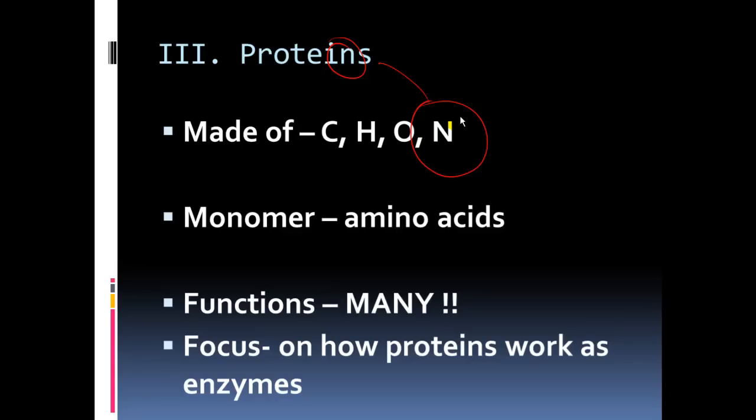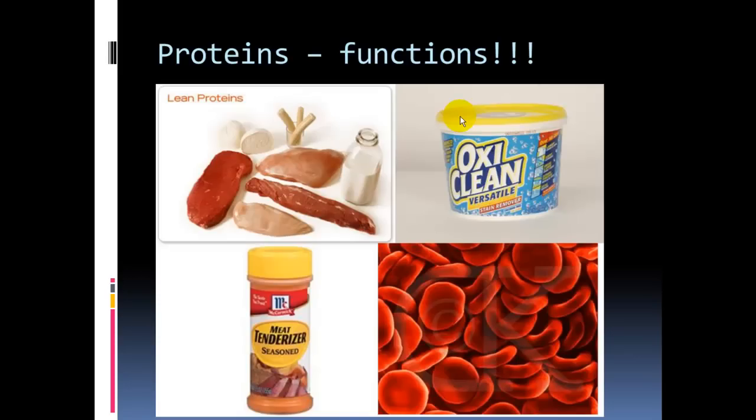We have thousands of proteins in our body. The one we'll focus on first is how they work as organic catalysts—as enzymes. Enzymes tenderize meat by breaking bonds, making it easier to digest. Meat, dairy, and tofu are proteins important for our diet. Stain removal also uses enzymes to break down molecules.